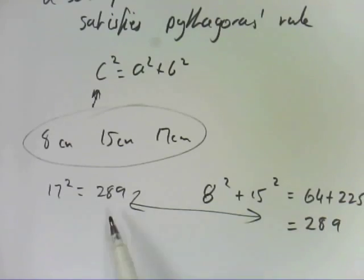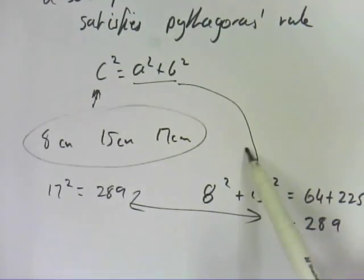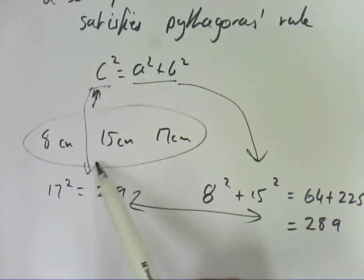So because they're the same, it means that both sides of this equation are the same. So this side was over here, and this side was over here. So because they line up, because they're the same, this is a Pythagorean triad.